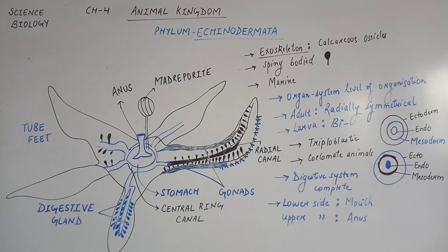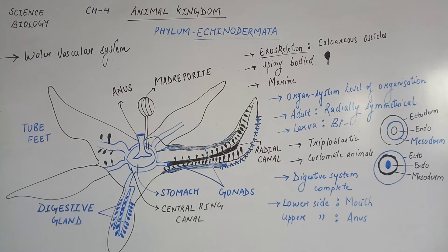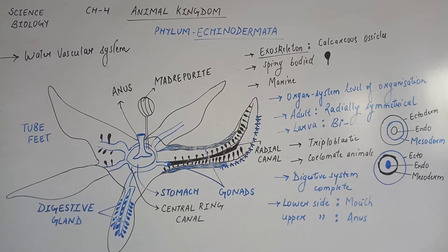Echinodermata में आने वाले सारे Organisms का Digestive System Complete होता है. इनका Mouth Lower Part पे होता है और Anus इनका Upper Side होता है. ये इनमें एक Distinguished Feature है कि इनका Lower Side Mouth है और Upper Side Anus है. एक और Special Feature इनका ये होता है कि इनमें Water Vascular System present होता है. Water Vascular System इनको Locomotion में, Food के Transport में, Respiration में, और Food Capture करने में भी हेल्प करता है. लेकिन Excretory System इनमें Absent होता है.